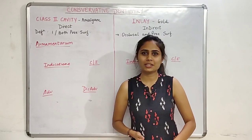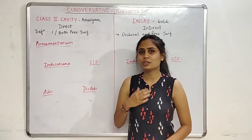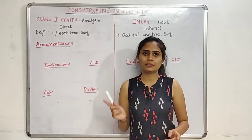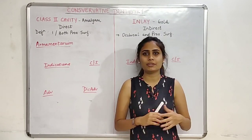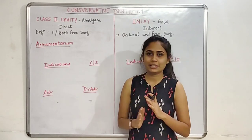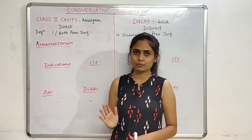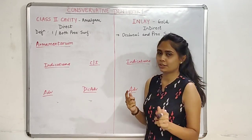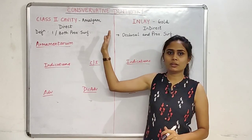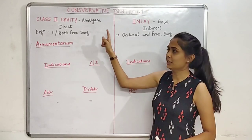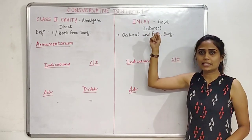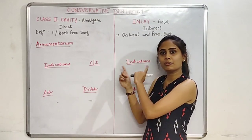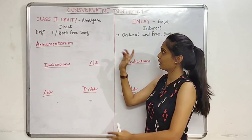Hi guys, my name is Aroy Maniar and today we are discussing a topic from conservative dentistry. It is the difference between the Class 2 cavity for amalgam and the inlay cavity for gold. We are explaining it in a very simplified way and you'll also see more diagrams coming up, so stay tuned. We'll see about our Class 2 cavity for amalgam — it is a direct restoration — whereas our inlay for gold is an indirect restoration.